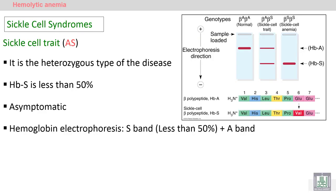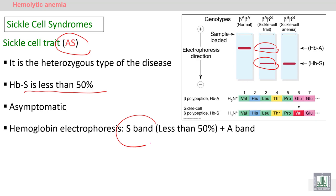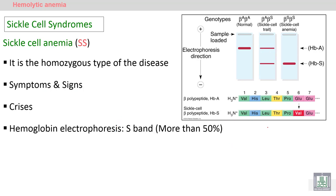Sickle cell trait: the genetic makeup is AS, so hemoglobin S is less than 50%. It is AS in structure — a heterozygous state. Because it is A and S heterozygous, it is asymptomatic, like the other traits we mentioned before. In hemoglobin electrophoresis, we will find S band in addition to A band — S plus A.